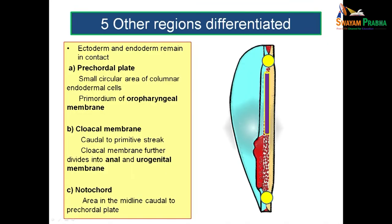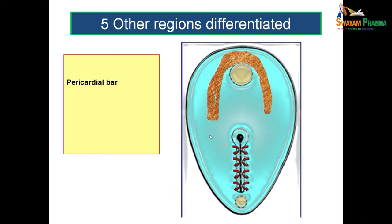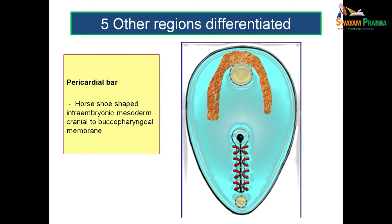Along the midline, during the formation of notochord, you would not get any intraembryonic mesoderm either. Another region is the pericardial bar — an inverted U-shaped intraembryonic mesoderm cranial to the buccopharyngeal membrane. As the mesoderm goes between the epiblast and hypoblast and reaches the pericardial plate, it cannot invaginate between those layers, so it winds around cranially to form an inverted U-shaped loop known as the pericardial bar.